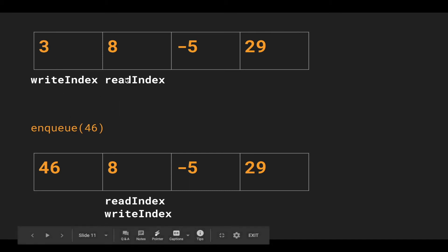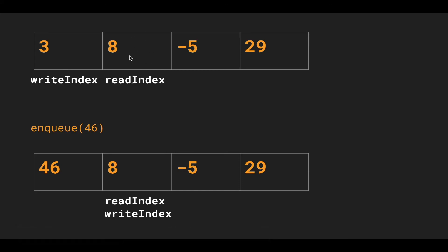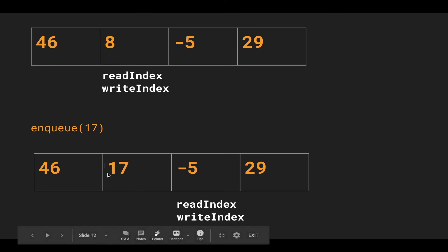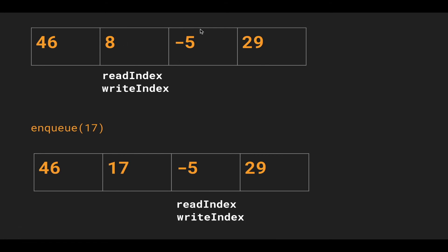At this point, write index is pointing to the same location as read index. This is our current state — read index and write index are pointing to the same element. We're going to enqueue 17, placing it where write index is pointing. Since read index and write index are pointing to the same element, we have to advance both pointers, overwriting 8. So the next value to read is not 17 — the first in order after 8 has been overwritten is negative 5.